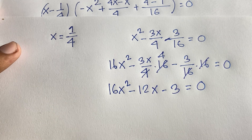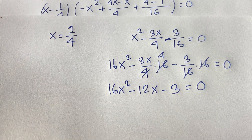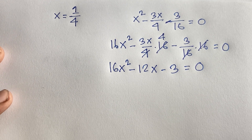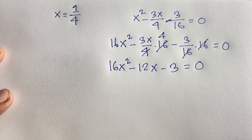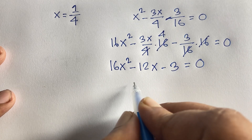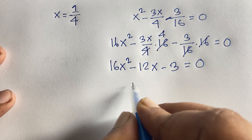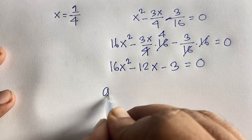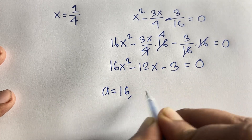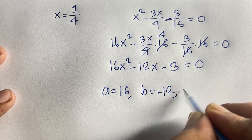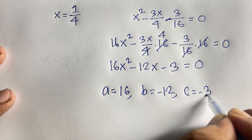So the quadratic equation is 16x squared minus 12x minus 3 equals 0. Comparing with ax squared plus bx plus c equals 0, we identify: a equals 16, b equals minus 12, and c equals minus 3.